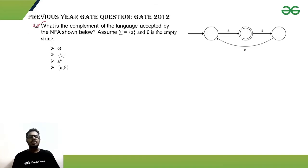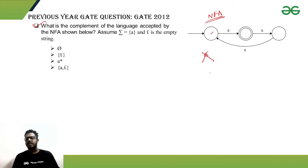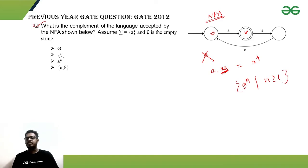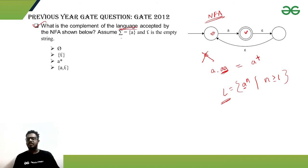GATE 2012: what is the complement of the language accepted by the given NFA? The initial state is not a final state, so the null string is not accepted. A single 'a' is accepted, and looping back allows 'aa', 'aaa', and so on. Overall, the NFA accepts the language a⁺, meaning strings of one or more a's (n ≥ 1).